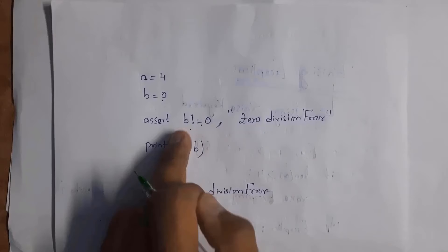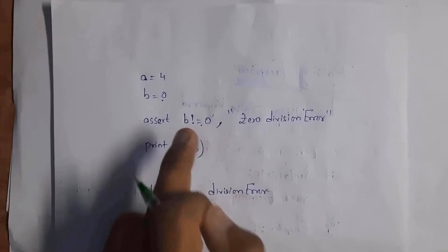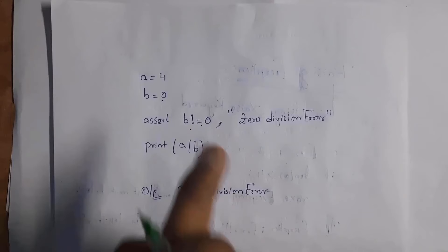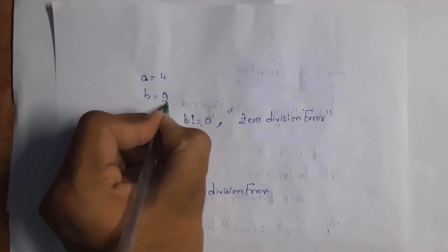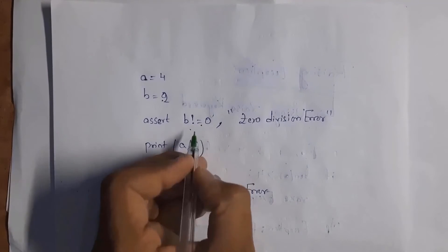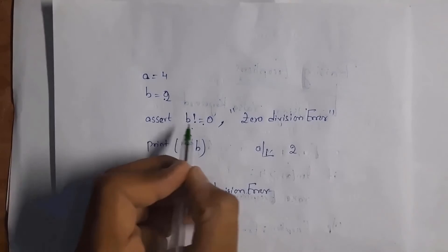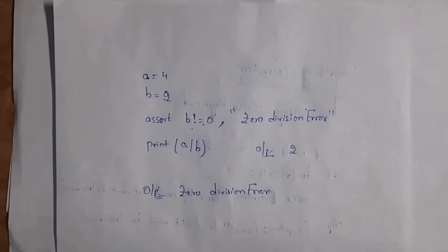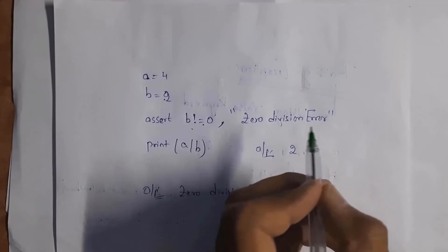Here b is equal to zero, so the condition b != 0 is not satisfied. It will not print a/b — instead it will display the error message 'zero division error'. But if I give b = 2, the condition is satisfied and execution continues, giving output 4/2 = 2. Only if the condition is true will it continue execution; otherwise it stops and displays the error.